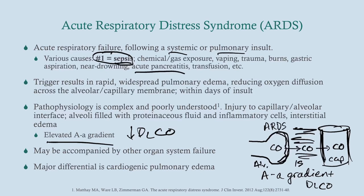ARDS can be accompanied by other organ system failure — you see that commonly in sepsis, such as acute renal failure. The major differential is cardiogenic pulmonary edema, which looks very similar on radiographs — you have impaired gas exchange due to fluid collecting in the interstitium. A very easy way to differentiate is the BNP lab. If BNP is elevated, you likely have congestive heart failure rather than ARDS.